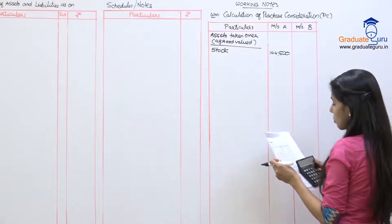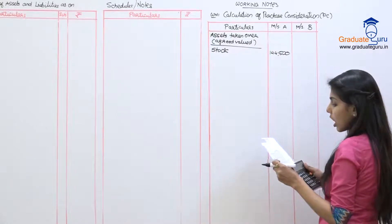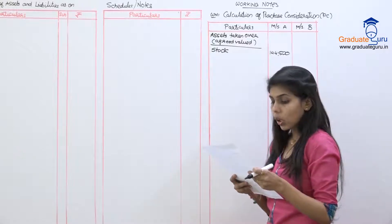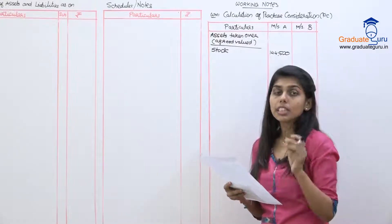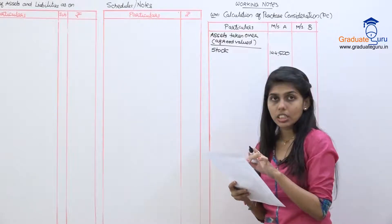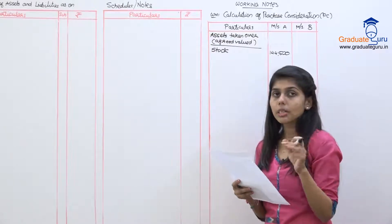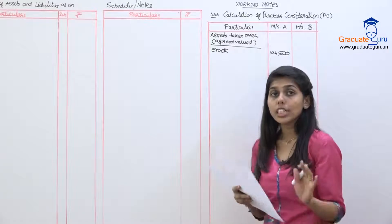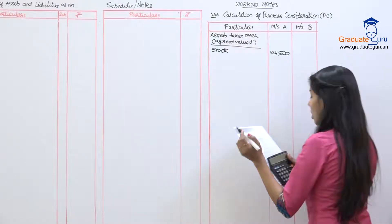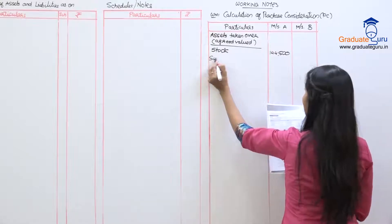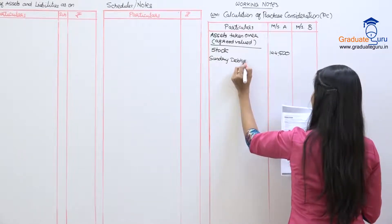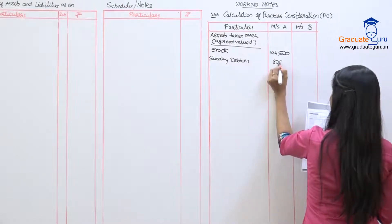After that, the portion of sundry debtors amounting to 9,000 is estimated unrealizable and not to be assumed by the LLP. So out of A's debtors of 89,000, 9,000 is not recoverable, so the LLP takes only 80,000 of debtors.